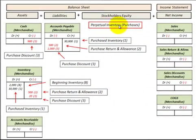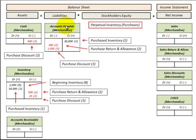Here we're going to look at a perpetual inventory system and first let's look at the purchases we make. Note throughout this presentation where the balance sheet items are — the assets, the liabilities — and then the net income or income items that go to the income statement.